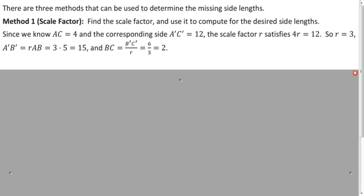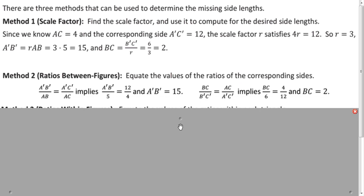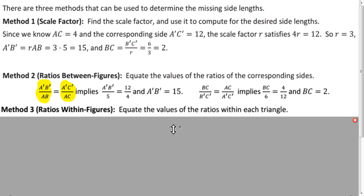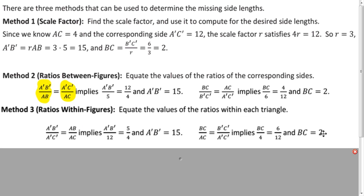So, now we know three different ways of solving these problems with similar triangles. We can solve them by using the scale factor. We could solve them by using the ratios between figures, which is very similar to what we've been doing with scale factor already — these are all equal to the scale factor. And depending on which way you're looking at the dilation, you could be looking at the reciprocal. The last new method is the ratios within figures — now we're dividing distances in the same triangle, relating that to the ratio of the corresponding sides in the other triangle.